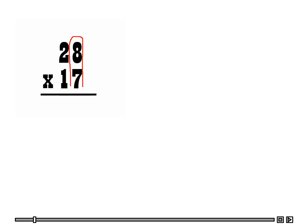Let's look at another multiplication problem, 2-digit by 2-digit. We are going to follow the same procedure, just like the first one — let's do this step by step and slow it down. So we are going to say 7 times 8 ones is 56. Now remember we are going to carry that over.